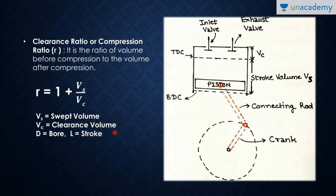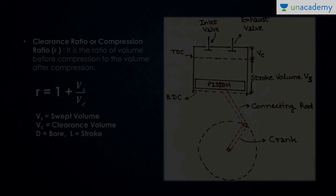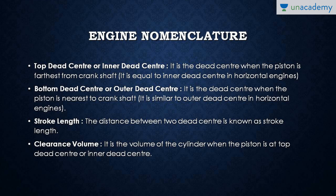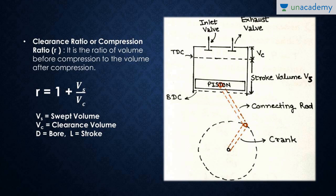The compression ratio, denoted by r, is the ratio of volume before compression to volume after compression: r = 1 + Vs/Vc, where Vs is swept volume, Vc is clearance volume, d is bore (cylinder diameter), and L is stroke length. When the piston is at BDC, total volume is Vc + Vs; when at TDC, the volume is Vc. So the compression ratio is 1 + Vs/Vc.